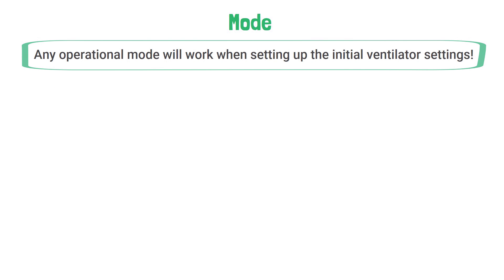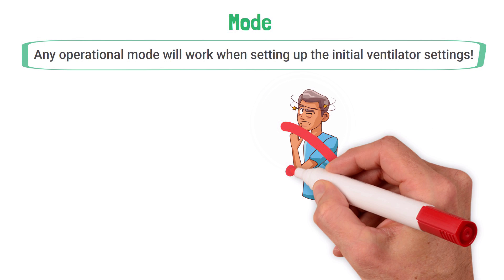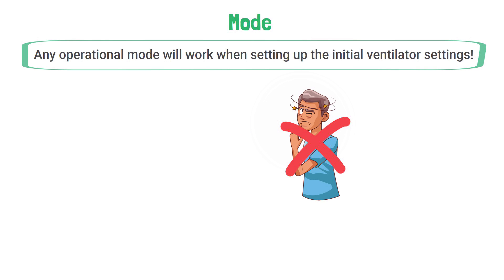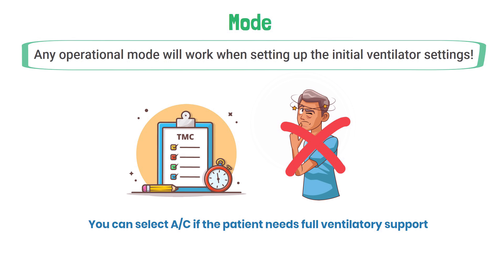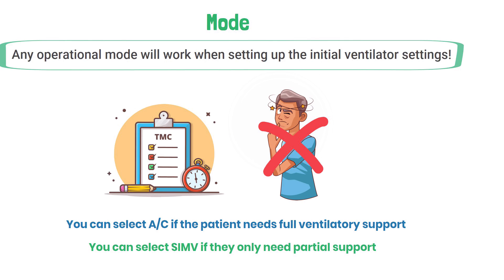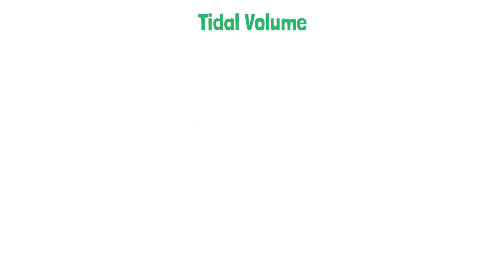It's important to remember that any operational mode will work when setting up the initial ventilator settings. You should not get too caught up deciding on the right mode — this is especially true for the questions you will see on the TMC exam. Just as a reminder, you can select assist control if the patient needs full ventilatory support, or SIMV if they only need partial support.